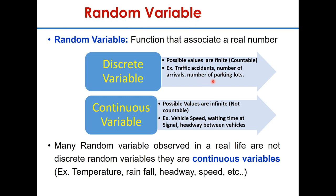Whenever you can express the values in whole numbers, it becomes a discrete variable. Traffic accidents cannot be 2.3, number of arrivals of vehicles cannot be 4.6 — so when you express these values in whole numbers, then it becomes a discrete variable. But when a variable can take infinite, or non-countable, values, then it becomes a continuous variable.